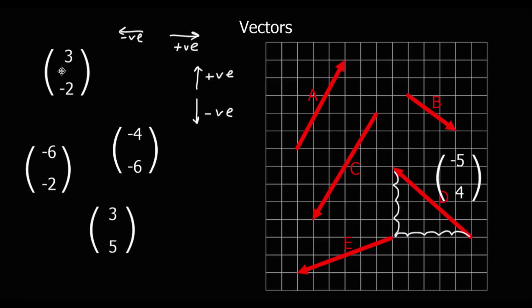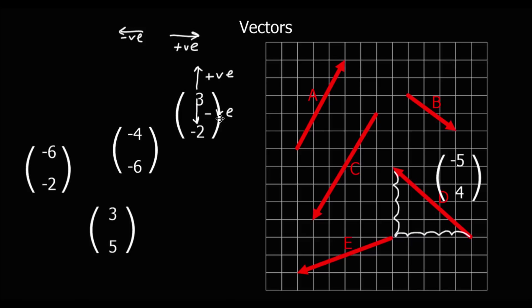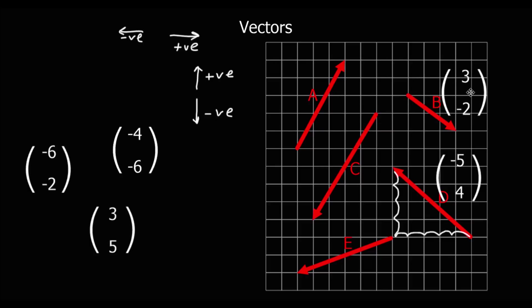The second one: we've got three, negative two. So the first number is the x direction — three to the right — and the second number is the y direction — down two. Three to the right and down two, so that's B.